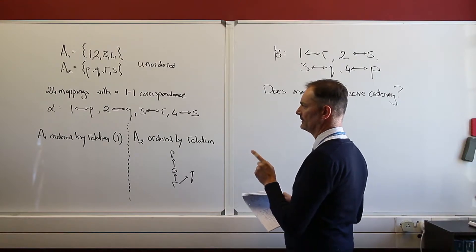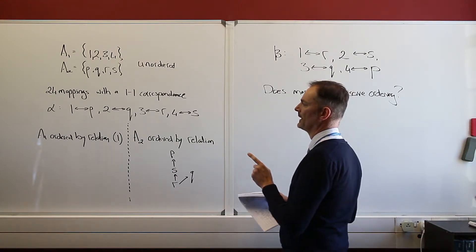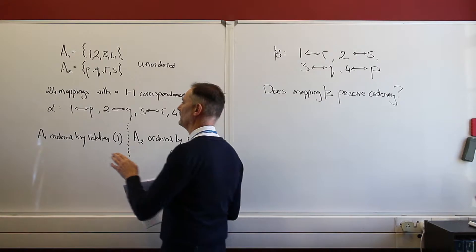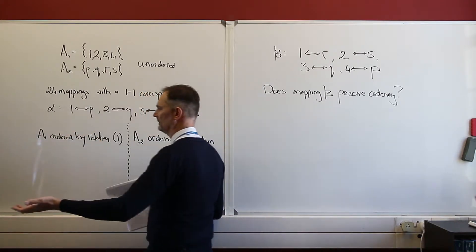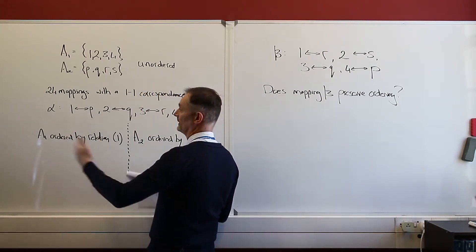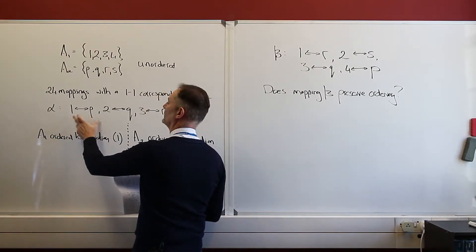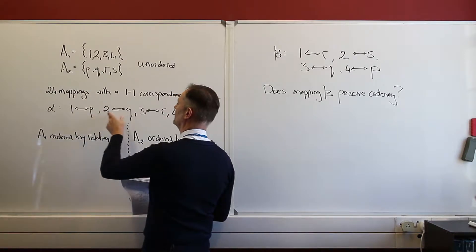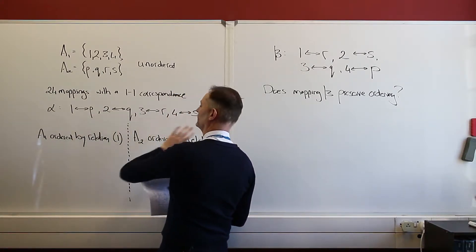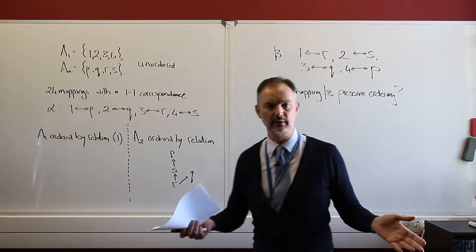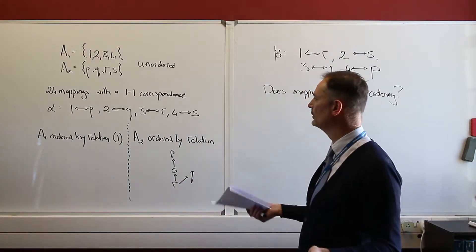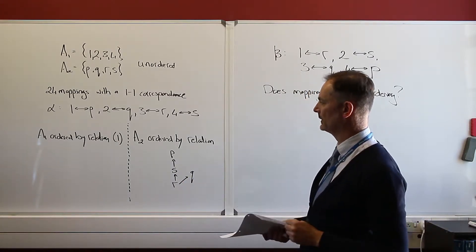Now you can well imagine that there are 24 mappings with a one-to-one correspondence. Now here's one such mapping, just one of those 24. And I'm going to call it my alpha mapping. In functional notation, that would be like the f of alpha, something like that. But the alpha mapping, it maps 1 to p in a one-to-one correspondence. So 1 to p, 2 to q, 3 to r, and 4 to s. That'd be one of the 24 valid one-to-one mappings with one-to-one correspondence.